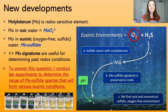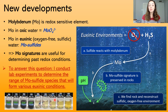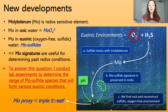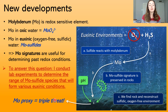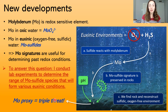But molybdenum behavior is influenced not only by redox conditions, but also by pH and biology. These two factors are also being tested in my experiments. If molybdenum species changes systematically with these factors as well, that opens the door for a triple-threat molybdenum proxy — using molybdenum species in sediment to tell us about past redox conditions, pH, and biological activity and biological communities around the time that molybdenum was sequestered.